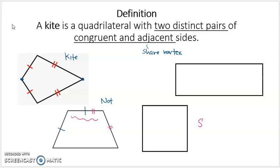But a square is a kite. It's a kite because I have this side and that side, which are adjacent — they share that vertex, so they're adjacent. Then I have the right side and the bottom side, which are also adjacent and also congruent. These two pairs are distinct — completely separate. So I have two distinct pairs of congruent and adjacent sides, which is why a square is a kite.